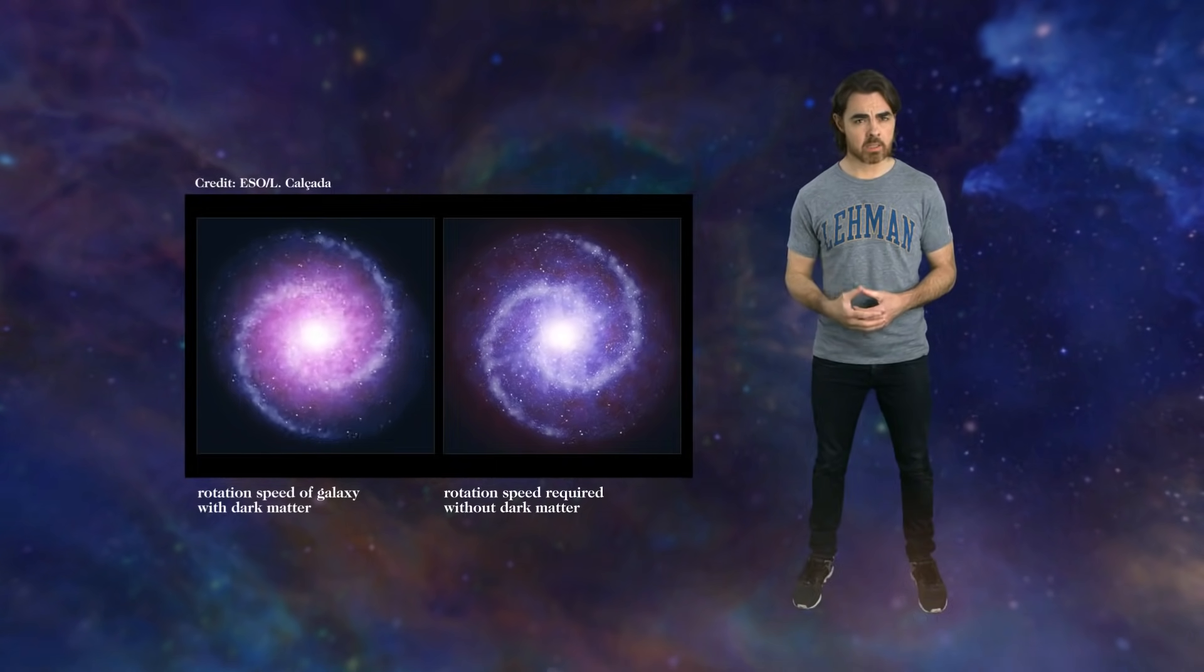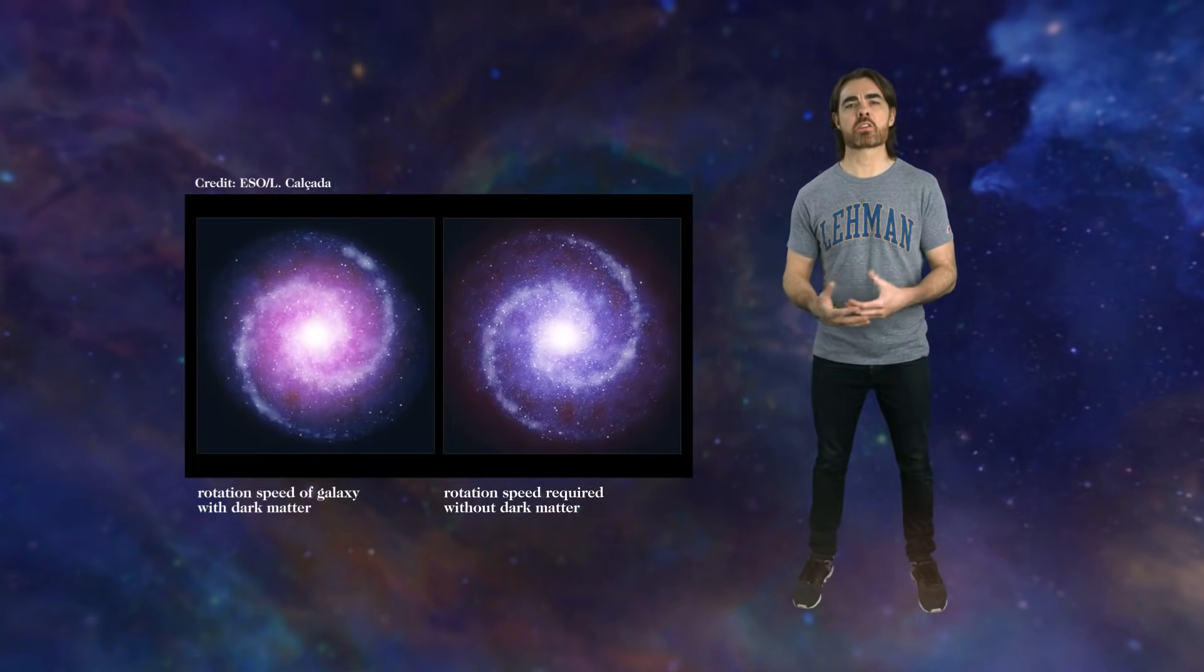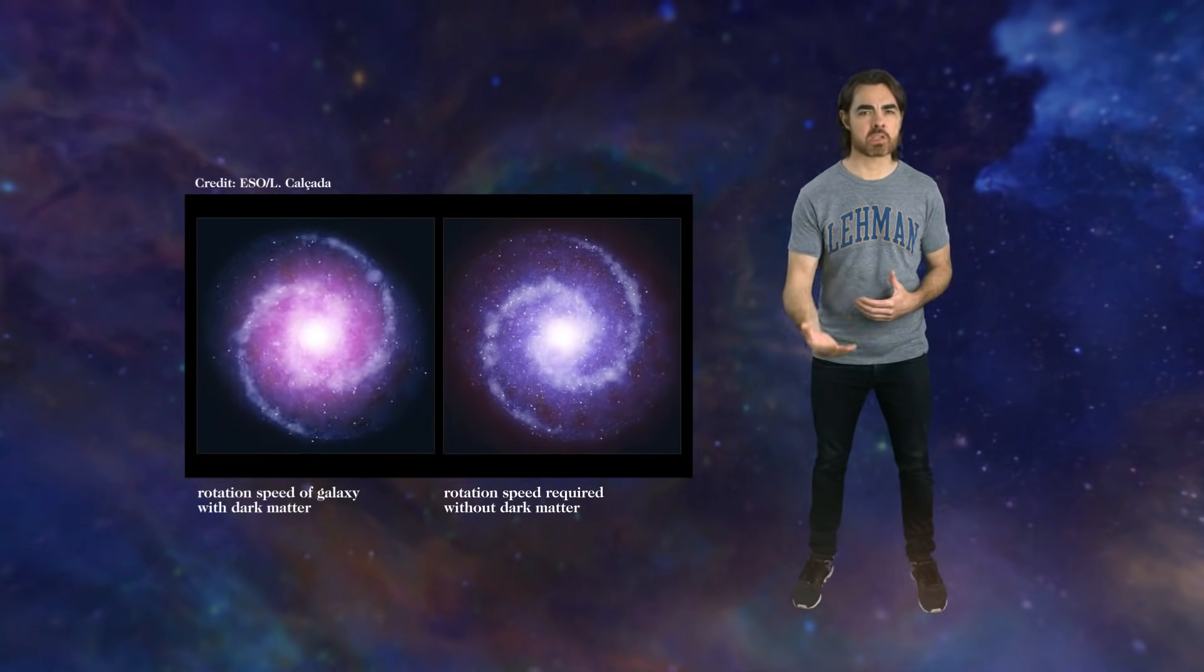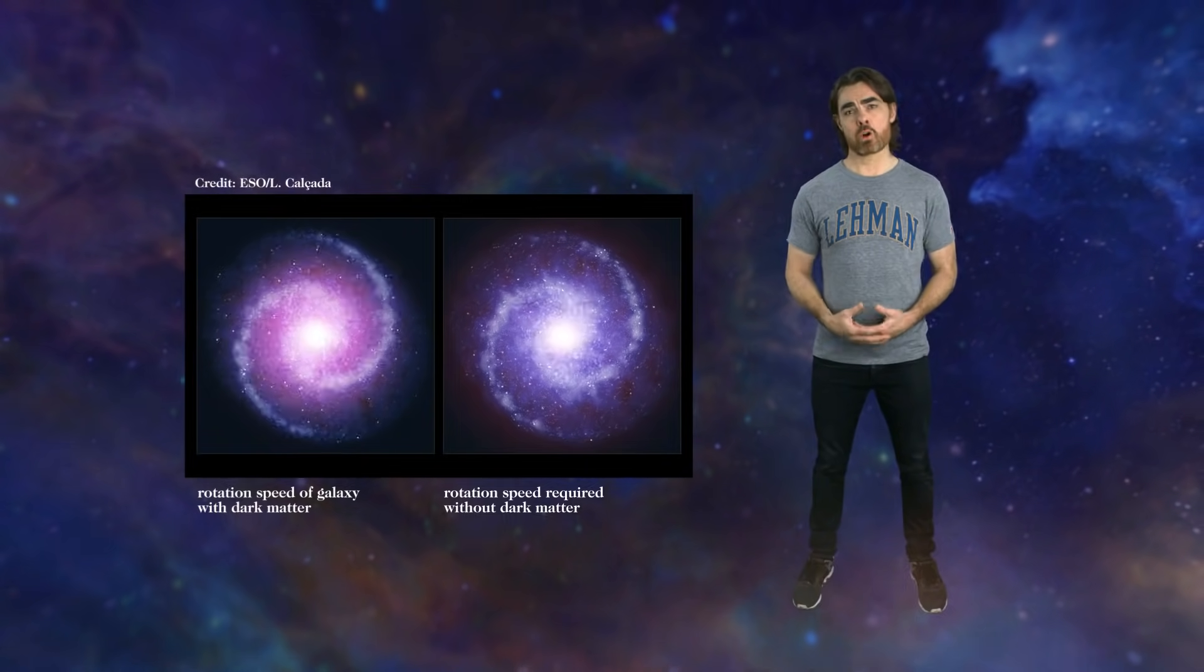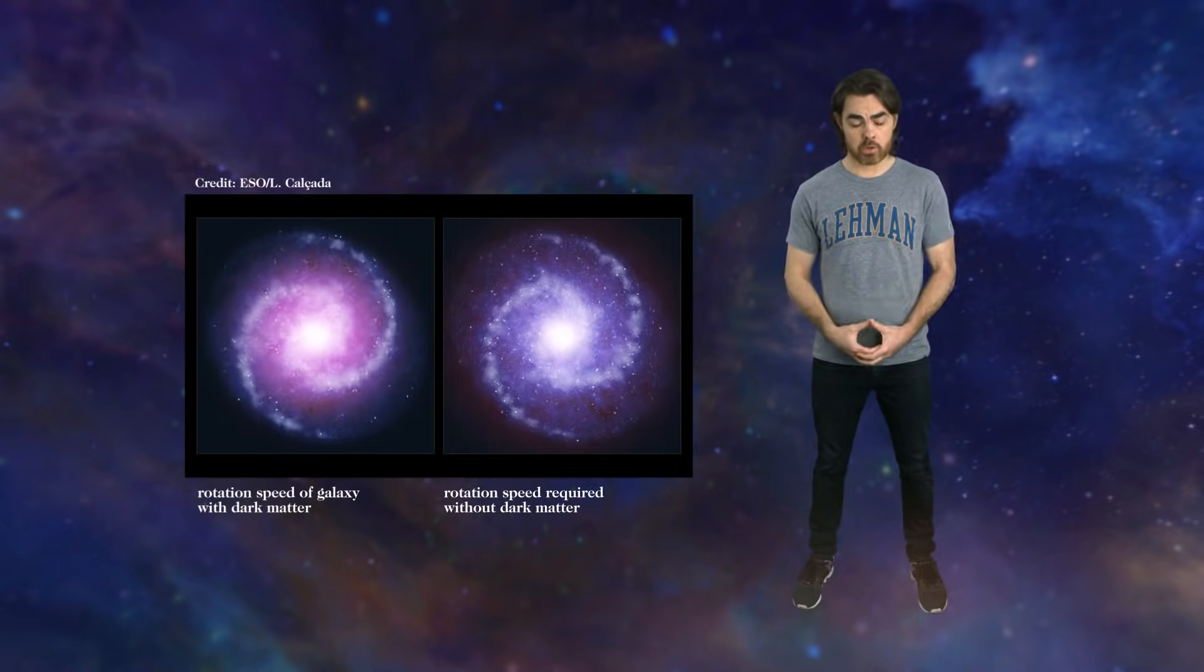So we conclude that galaxies, and for that matter the universe, has five to ten times as much matter as we can actually see. We call it dark matter, and try as we might we can't find the presumably exotic particle that constitutes it.